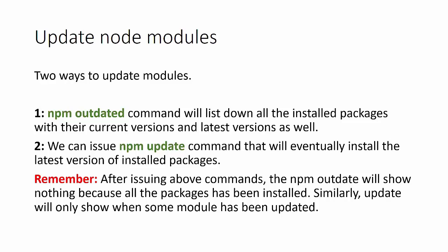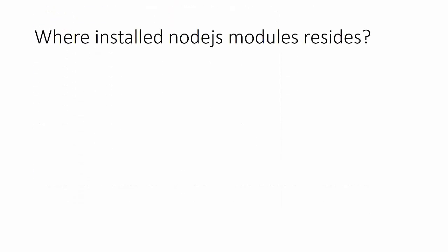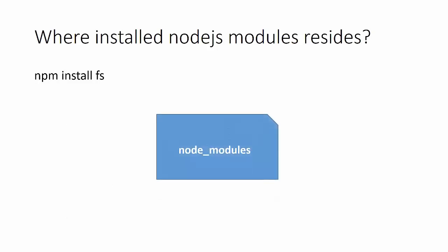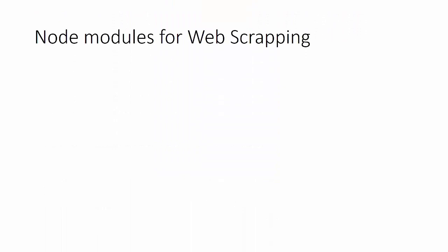For web scraping in this course, we will use only two node modules: Selenium WebDriver and fs. Let me show you how to work with the command prompt to install modules. I'm in my E drive inside the web-scraping folder. To bring up PowerShell in the current directory, press Ctrl+Shift and right-click, then select 'Open PowerShell window here'. This way you can access Node.js from any folder location without manually changing directories.